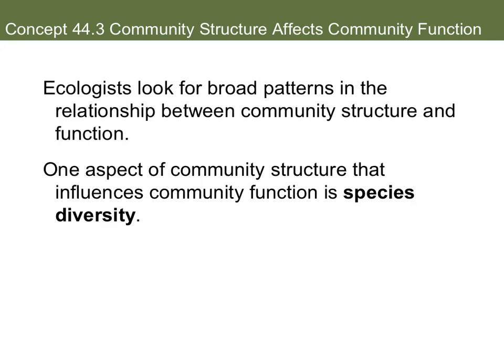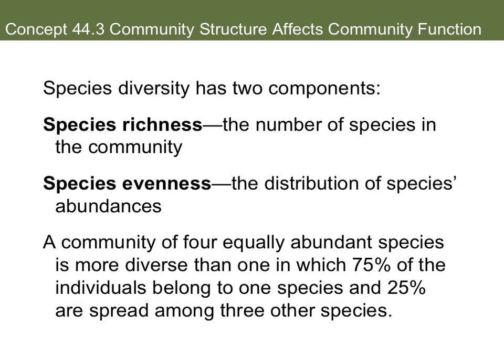Ecologists look for broad patterns in the relationship between community structure and function. One aspect of community structure that influences function is species diversity. Species diversity has two components: species richness, which is the number of species in the community, and species evenness, which is the distribution of species abundance. A community of four equally abundant species is more diverse than one in which 75% of individuals belong to one species and 25% are spread among the other three.